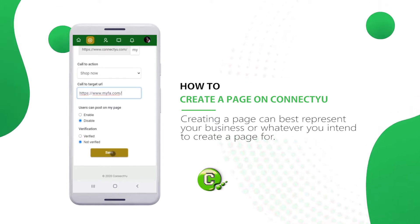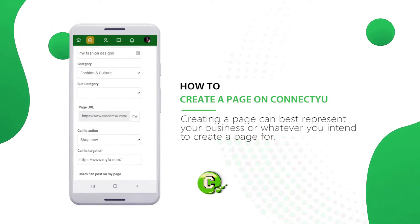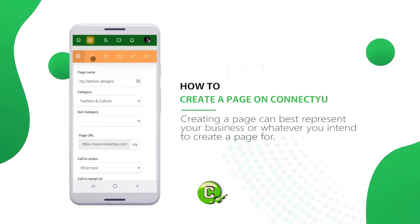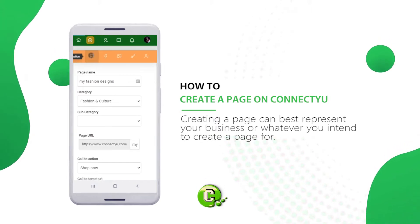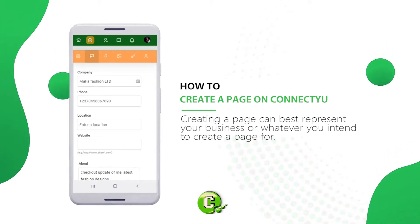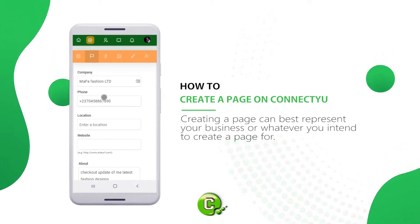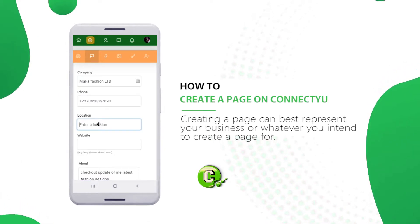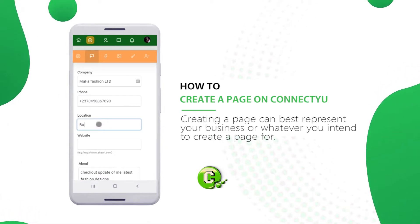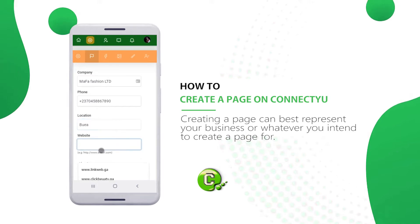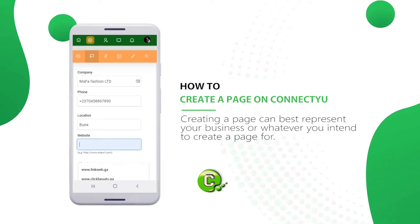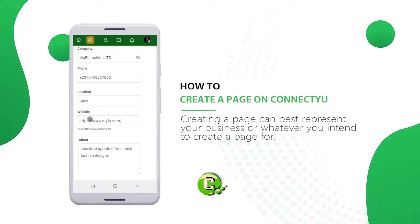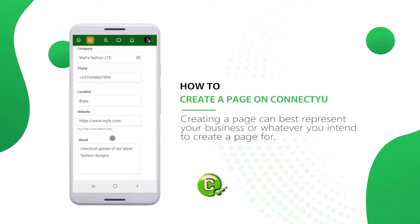Click on Save and proceed to the next page by clicking on the flag icon at the top of the page. On this page, fill in your company or page name, phone number, location, and website. The location will help direct people easily to your business by the use of Google Maps if you have enabled location visibility on your settings and device settings.